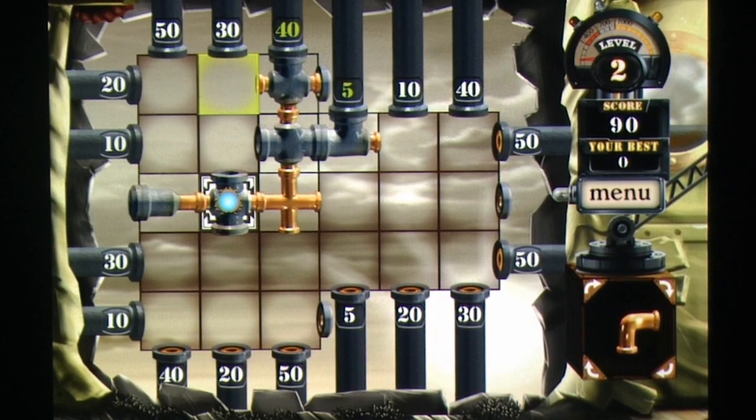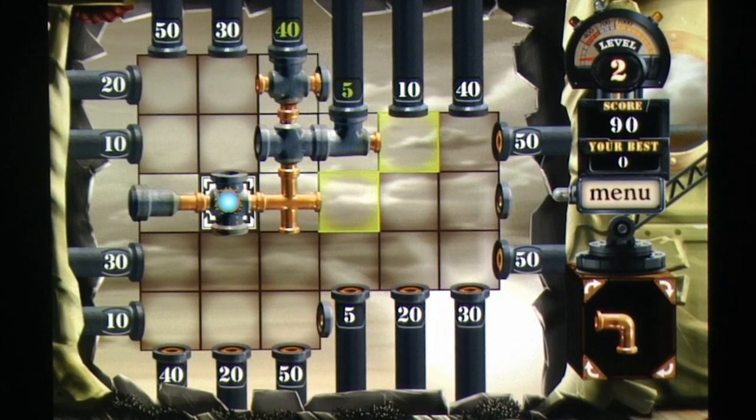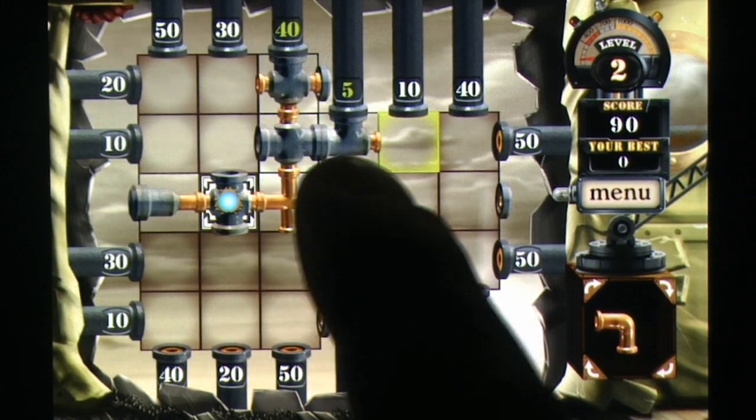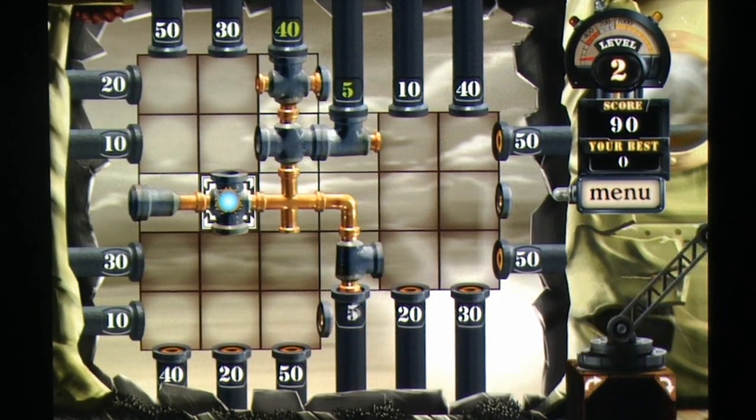This can create scenarios where you're unable to connect your latest pipe piece to anything and thus must choose a tile on the grid to place it as a stopper, which halts all pipe flow.